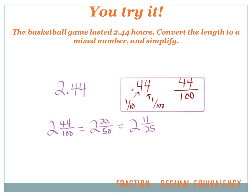I can simplify that because the numerator and the denominator are both even numbers. I can cut it in half, so 44 cut in half is 22, half of 100 is 50. They're still even numbers, so I can cut them in half again. 22 cut in half is 11, 50 cut in half is 25. Now I'm down to 2 and 11 twenty-fifths, and that's as far as I can take it.